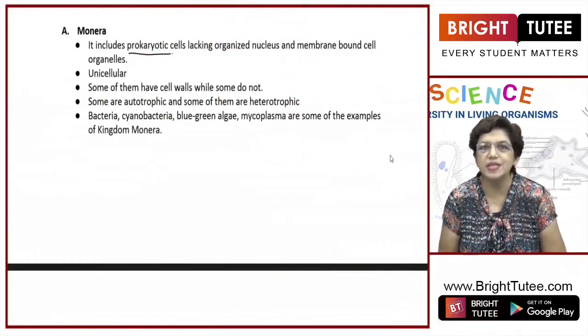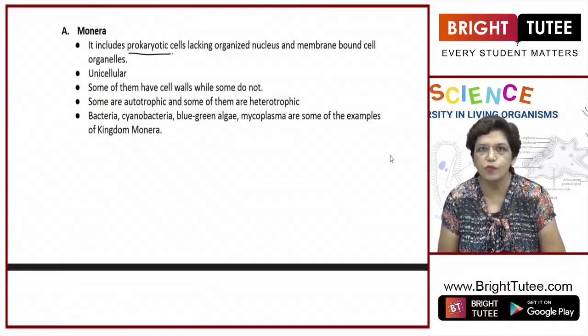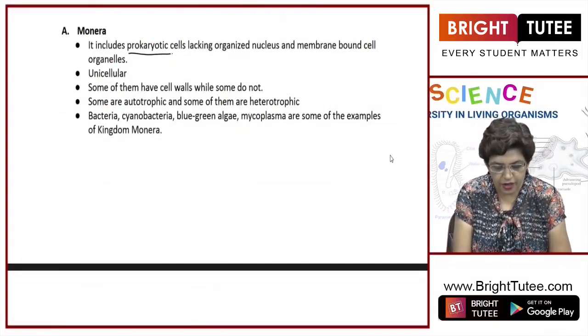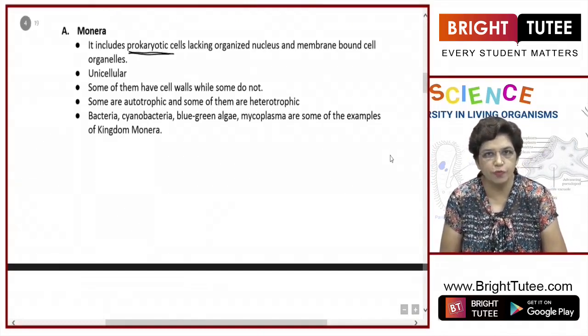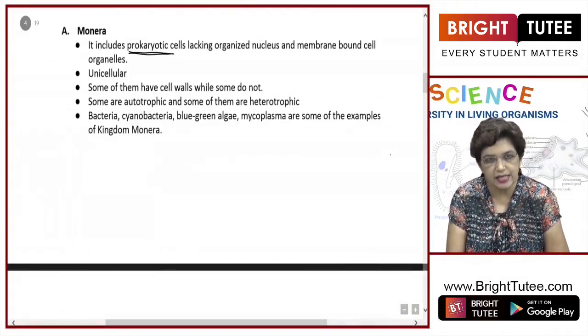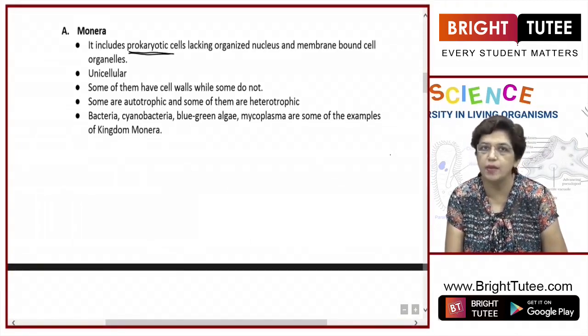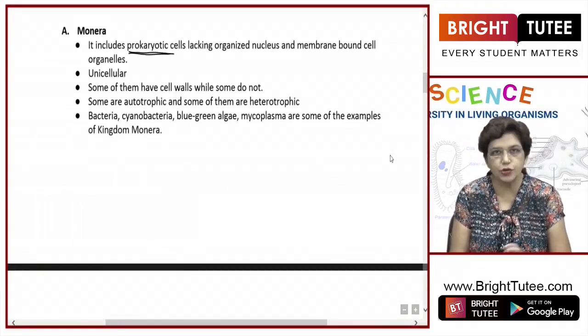The first kingdom is Monera. Let's see what their characteristics are. First, it includes prokaryotic cells. What is the definition of prokaryotic cells? These cells lack organized nucleus and membrane-bound organelles. I'll just draw a diagram of a bacteria which will help you understand.